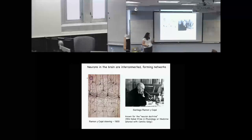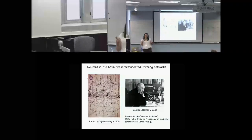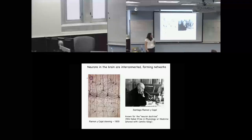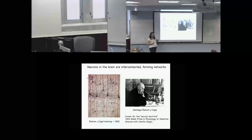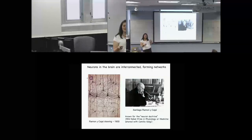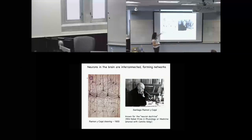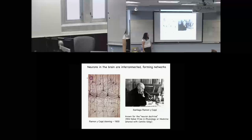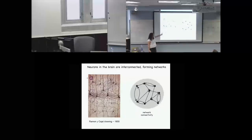Just to start with some background. This is a famous drawing from Ramón y Cajal. As early as 1900, we knew that neurons were these individual cells that were interconnected in networks. He got the Nobel Prize in 1906, shared with Golgi, who was responsible for the stain that allowed him to selectively see these neurons. Interestingly, they spent their whole Nobel Prize speeches fighting with each other because Golgi did not believe in this neural network model. The big takeaway now is we can extrapolate to this network model with connectivity.